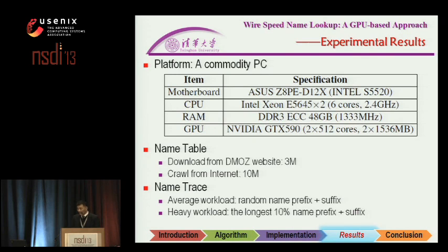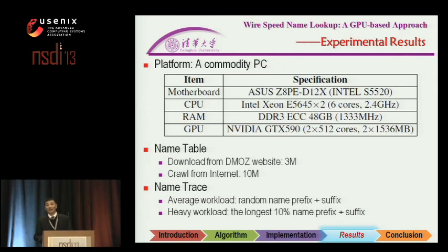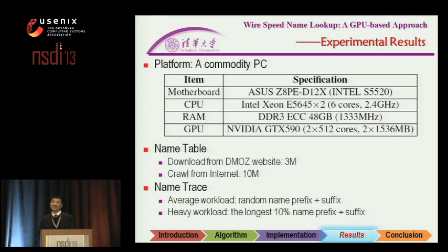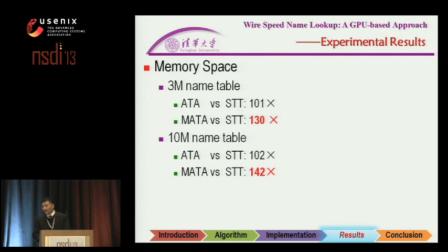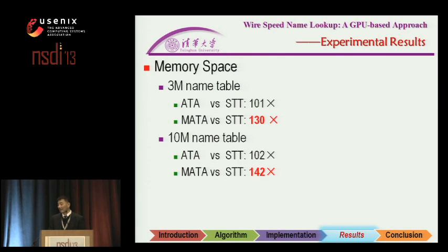For experimental results, we use a general server plus GPU board. We use two name tables: one with 3 million entries (publicly available) and another with 10 million entries we constructed ourselves. We use packet traces with average and high workloads. Comparing to the STT table, our proposed MATE compresses memory occupation by 130x and 142x respectively for the 3 million and 10 million tables.